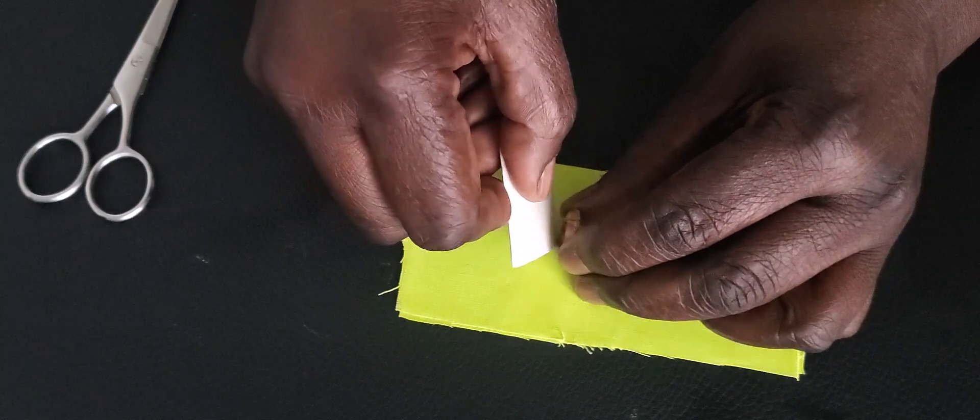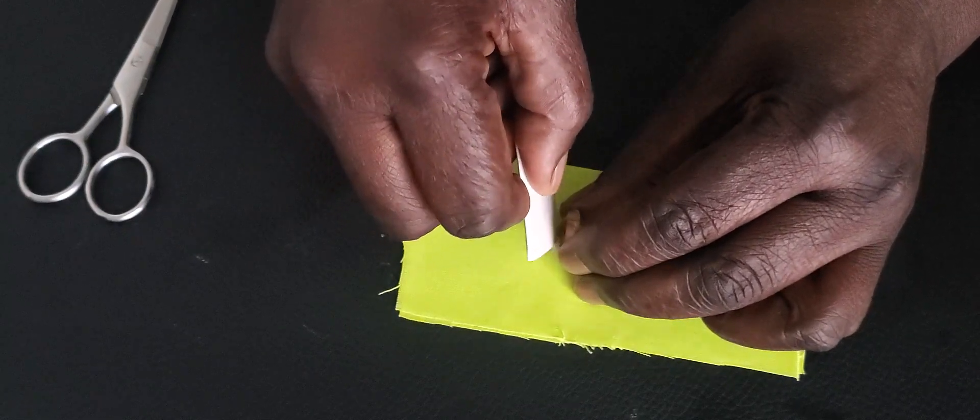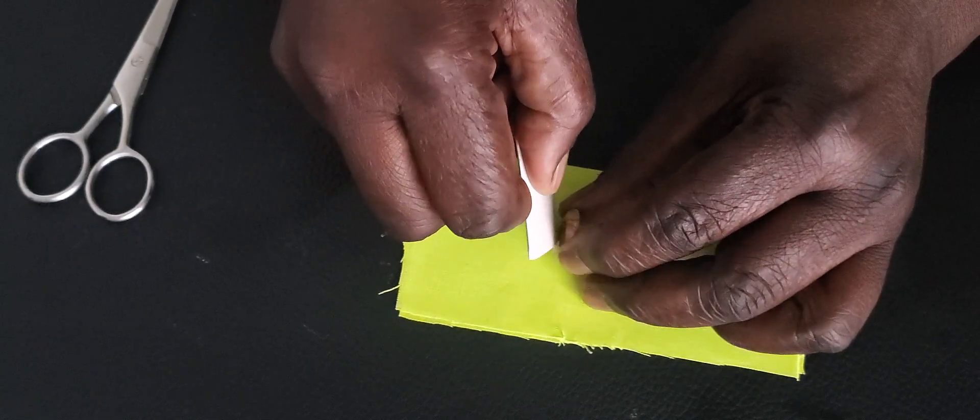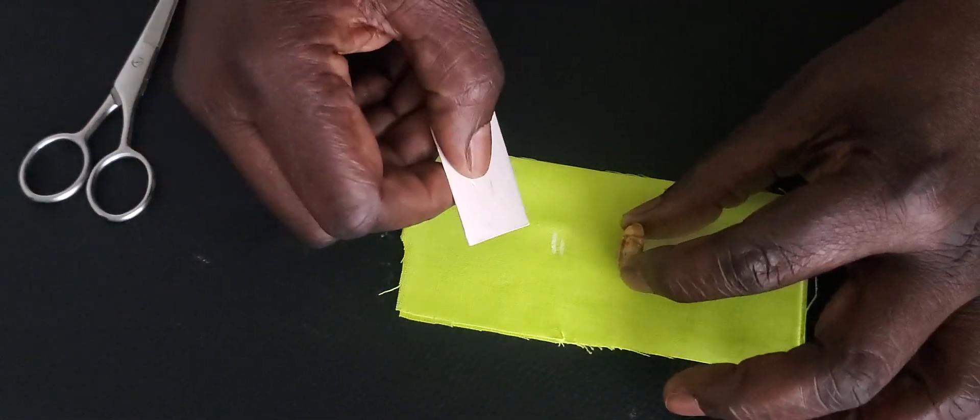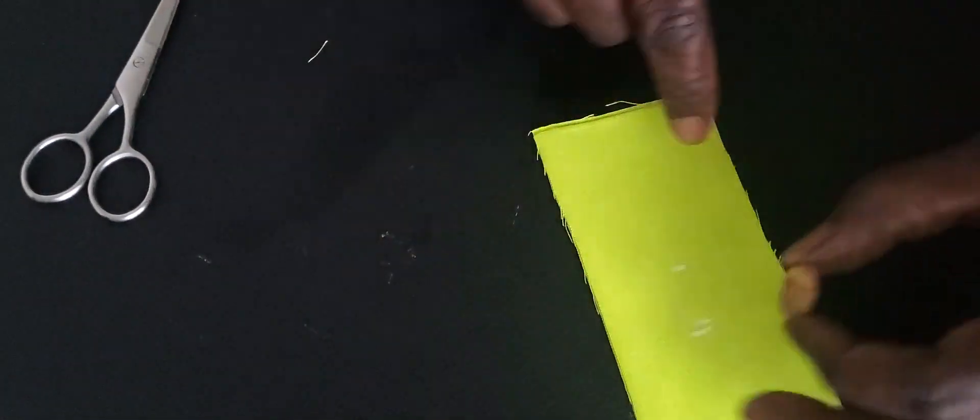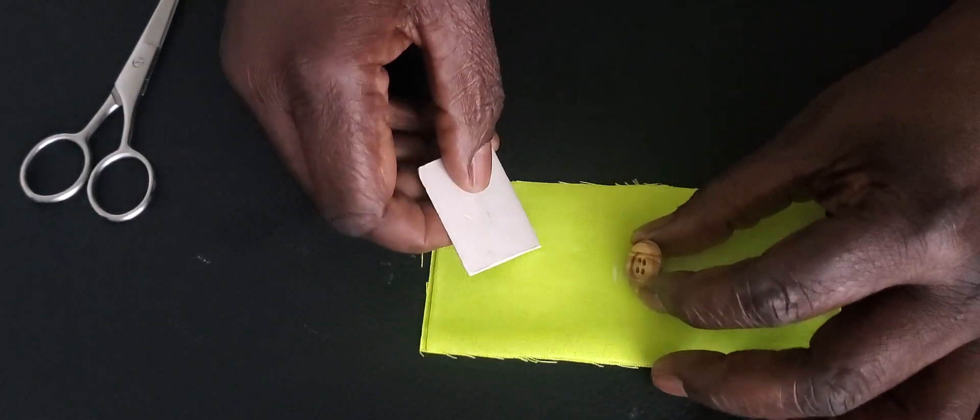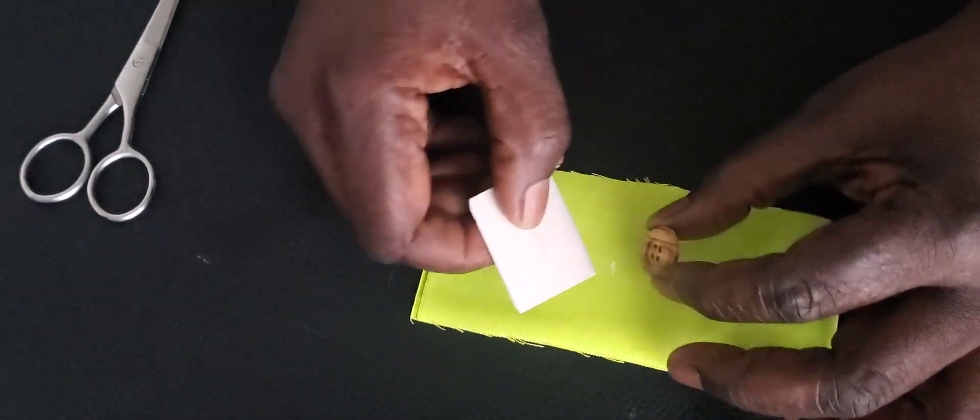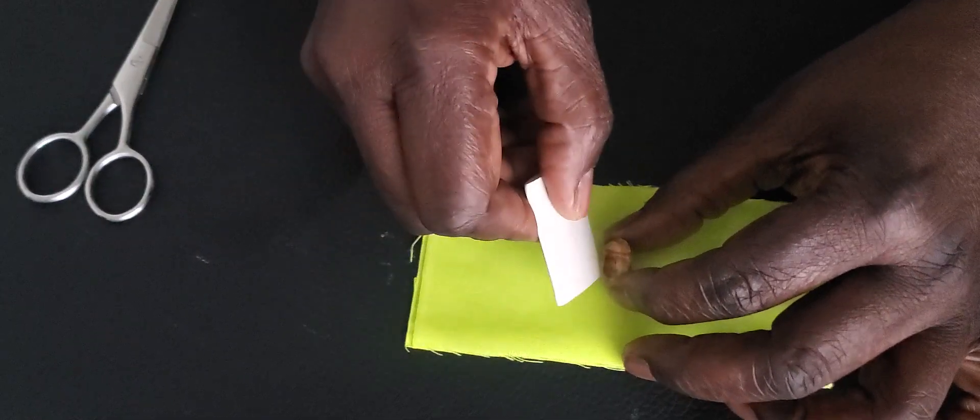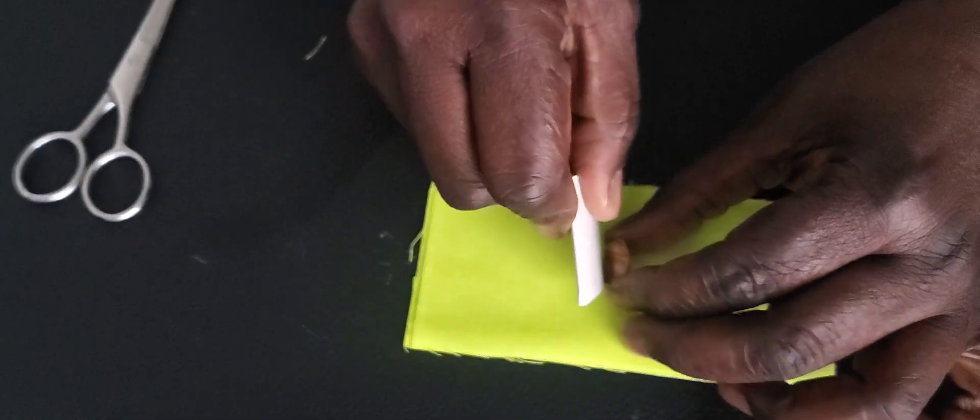You either place it on the fabric or you take a tape measure and you measure. Change to the side, this is where the first mark is, and you come and place your button.